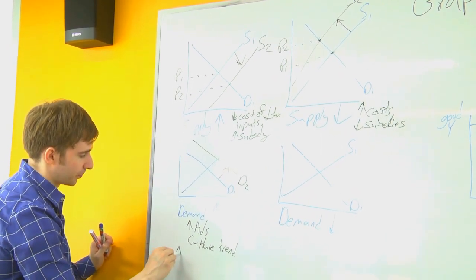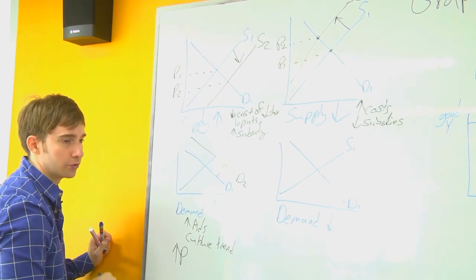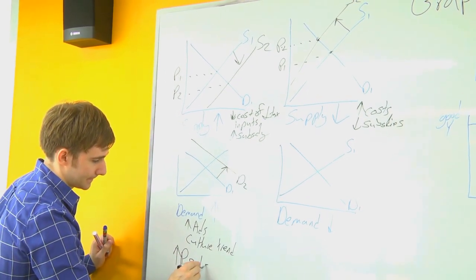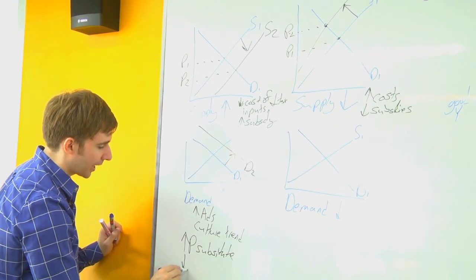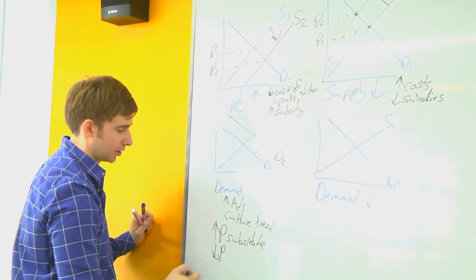Another thing that can cause our demand to shift outward to the right: if the price of a substitute goes up, or if the price of a complement goes down.